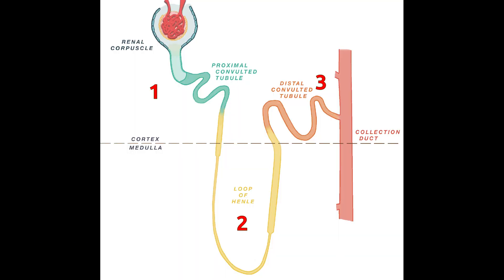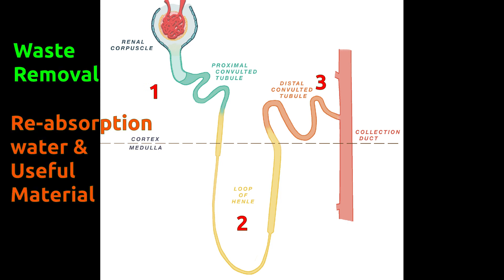Inside the nephron, blood passes through three layers where removal of waste and reabsorption of water and other useful materials takes place.